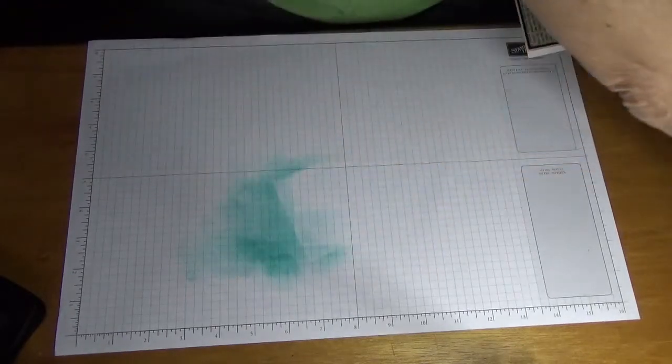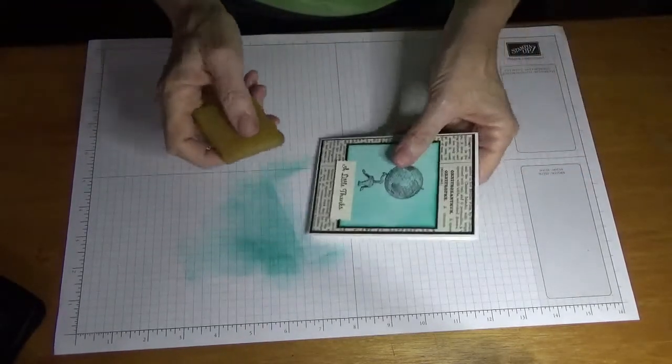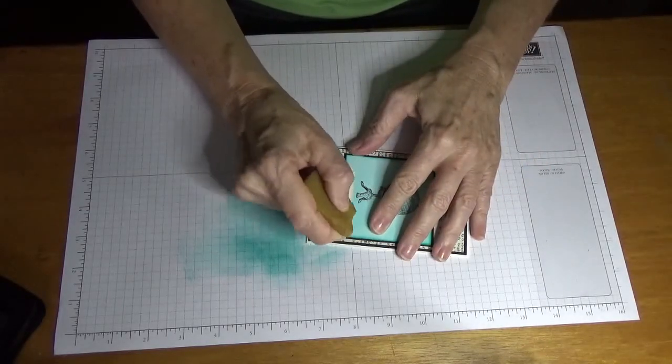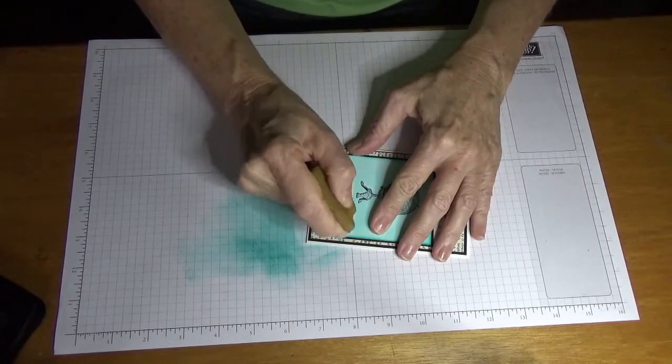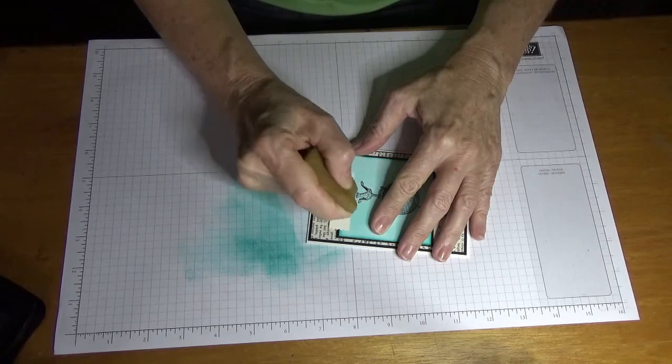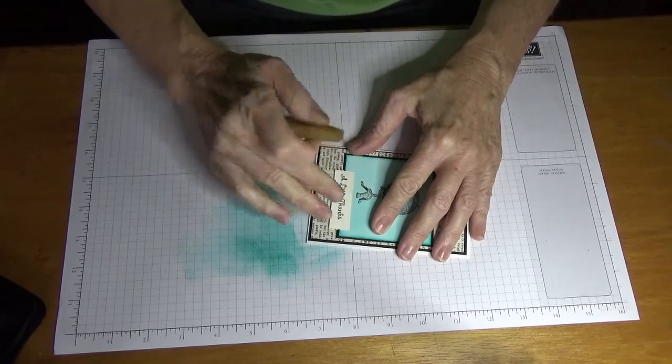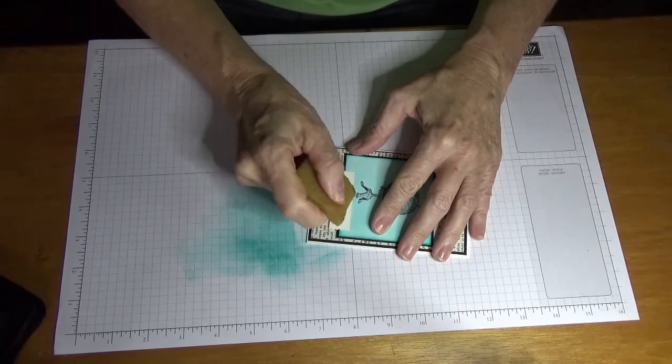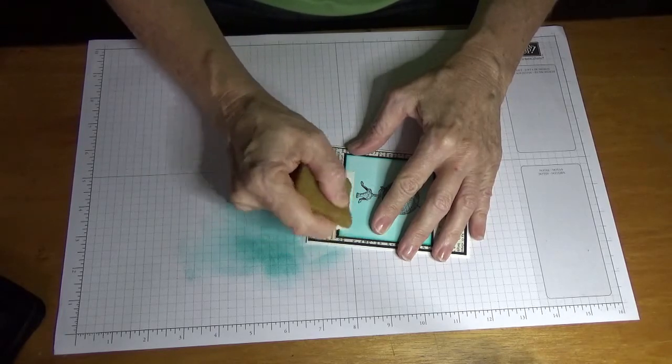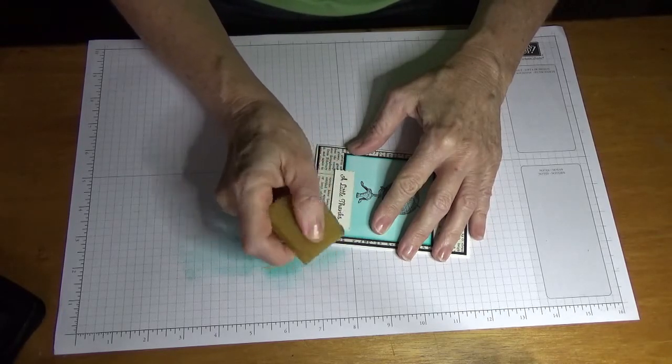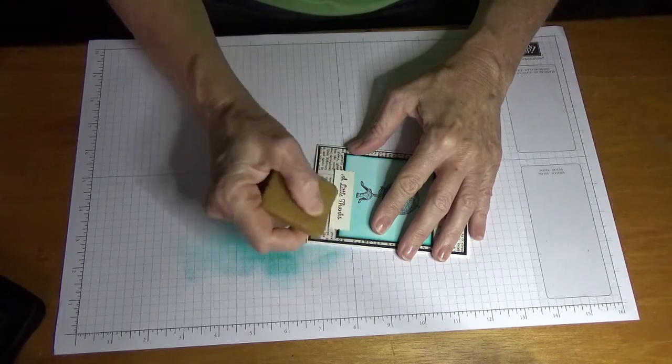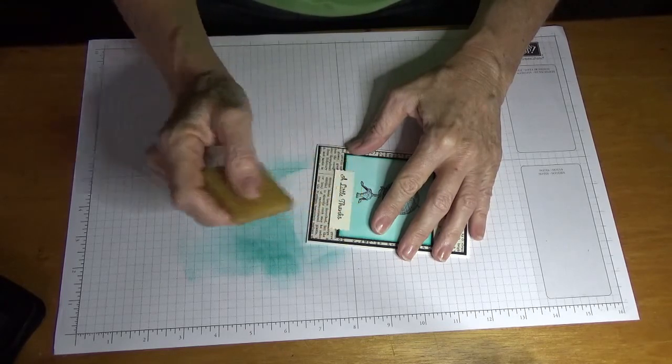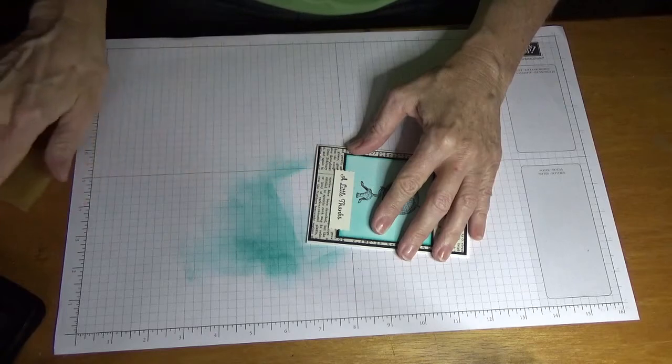Now there is a little bit of adhesive on there, so a tip for you is just run your adhesive eraser along there and it will lift off that bit of Snail. You know, I made the whole other five without this happening.